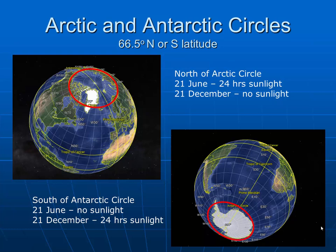Likewise, the Arctic and Antarctic circles are related to the Earth's axial tilt. At 66.5 degrees north or south latitude is the location of the Arctic circles. North of the Arctic circles, around the summer solstice, they will receive 24 hours of sunlight. Around the winter solstice, which is on or about December 21st, there will be no sunlight north of the Arctic circle. Similarly, in the Antarctic, at the 21st of June, there will be no sunlight south of the Antarctic circle.